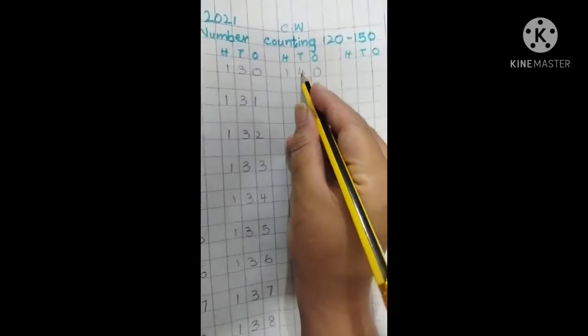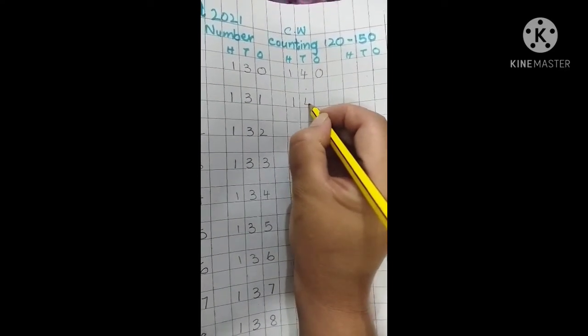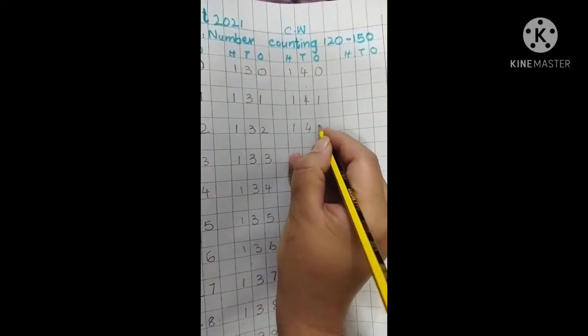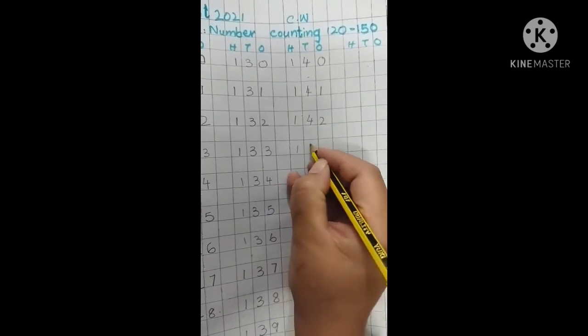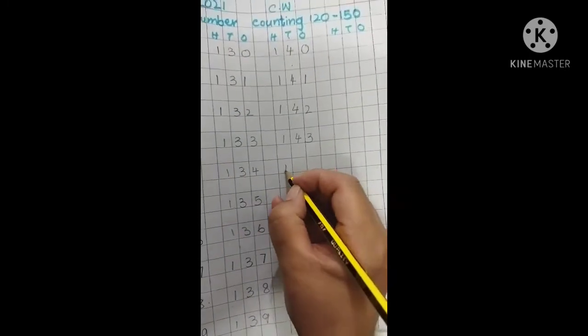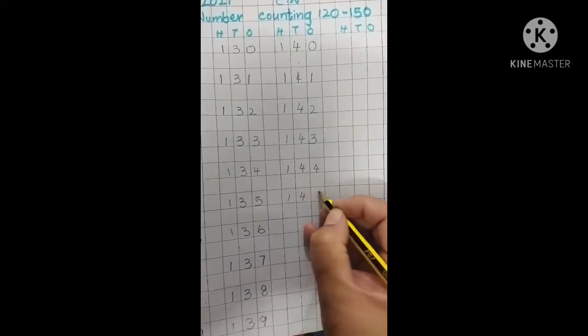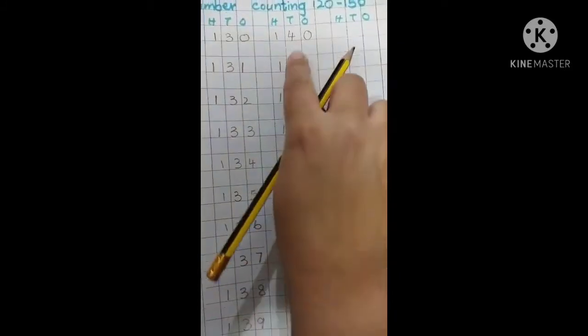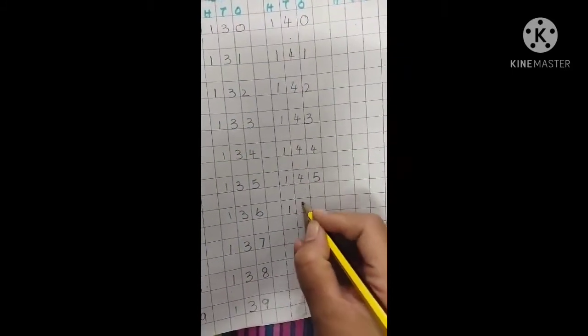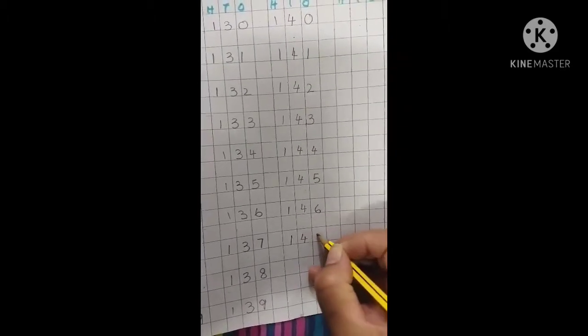Now we will make friends of 40. First you will write 1 for 100 and then 41: 141, 142, 143, 144, 145. Look at the formation of 4, you will write 4 like this, make a tail. 146, 147.